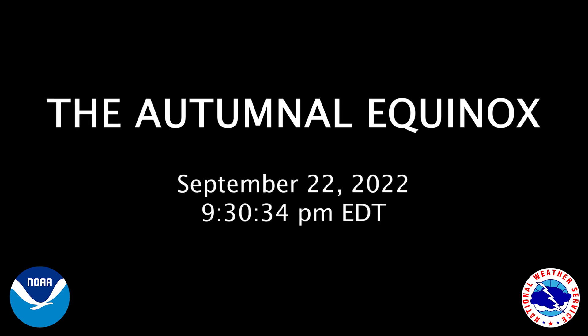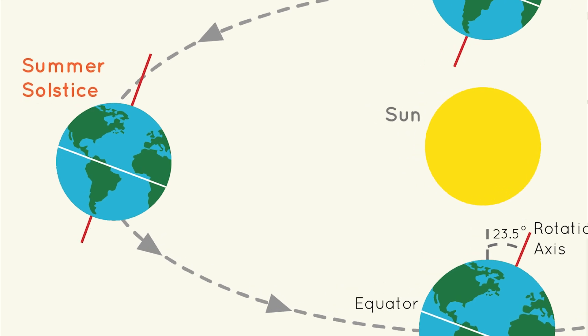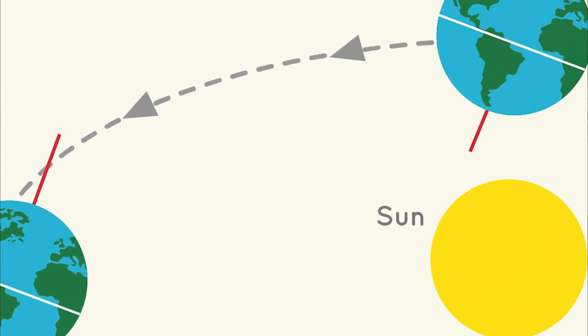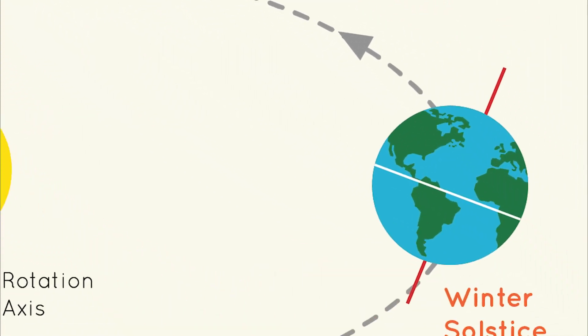Because of the Earth's tilt relative to its orbit around the Sun, the Sun's position in our sky cycles north and south through the course of the year. It's the main driver of the Earth's seasons.